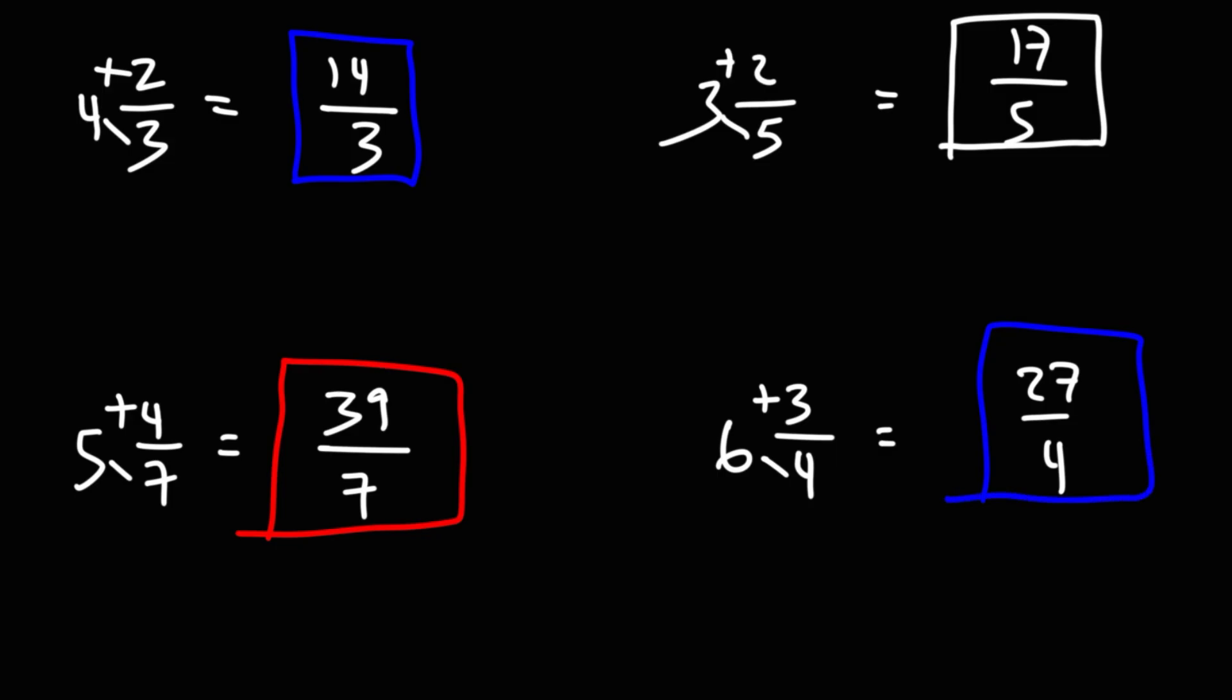So that's how you can convert a mixed number into an improper fraction. First, rewrite the denominator. Next, multiply the whole number by the denominator, and then add the numerator to get the numerator of the improper fraction.